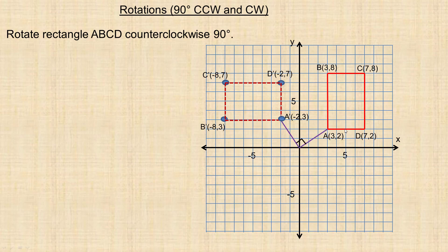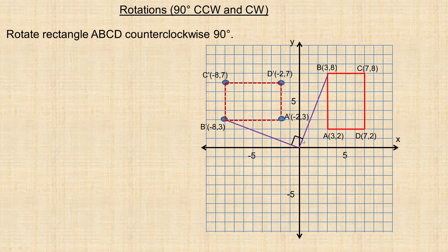Another way to verify the rotation is exactly 90 degrees: the distance from the origin to the original point and to its image must be the same. Thinking of those right triangles — if both triangles have legs of 2 and 3, the hypotenuse distance must be equal. Also, if you draw lines from the center of rotation to both the original point and the image point, the angle between them is exactly 90 degrees.